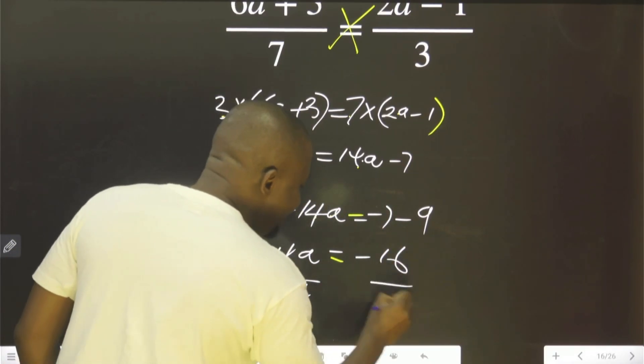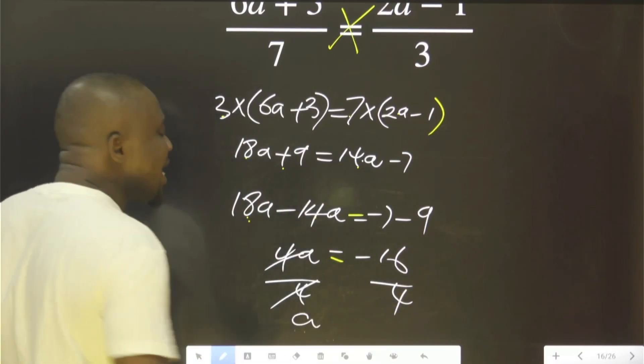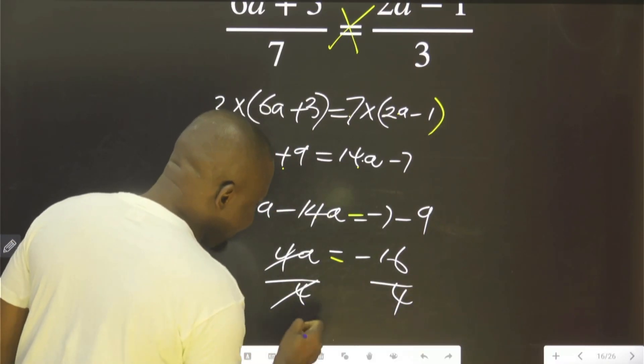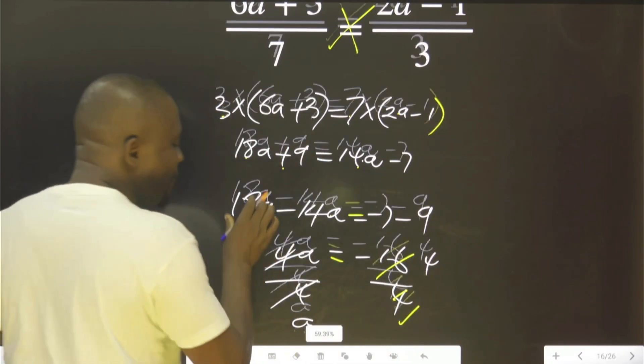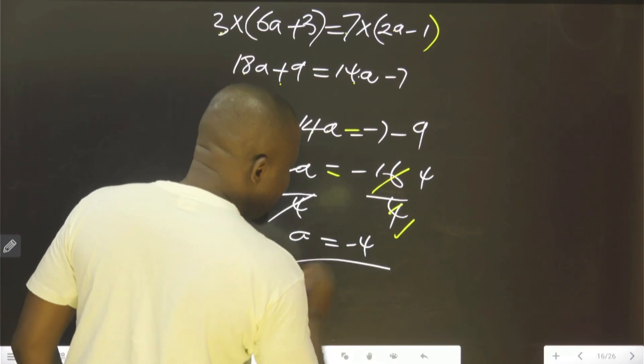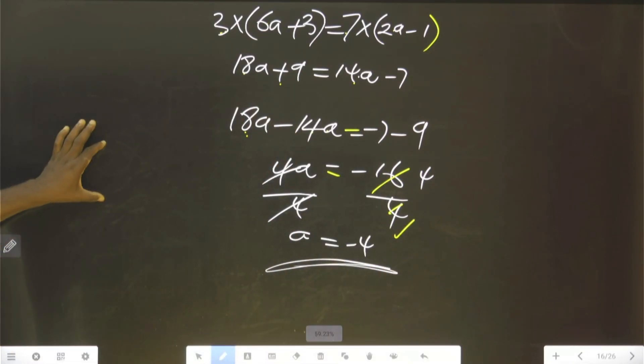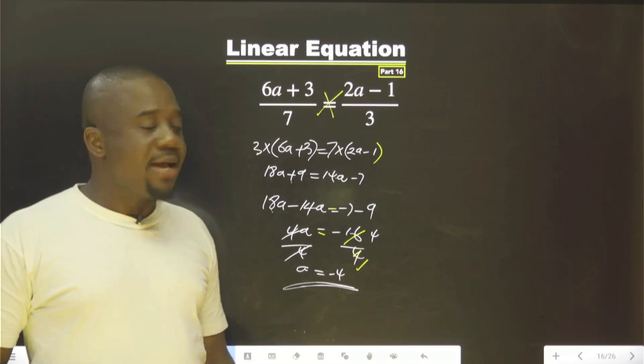We divide both sides by 4 so that only A can remain alone. That is the reason why we are dividing both sides by 4. Here 1, here is 4. Therefore, A equals minus 4. This is our final answer.